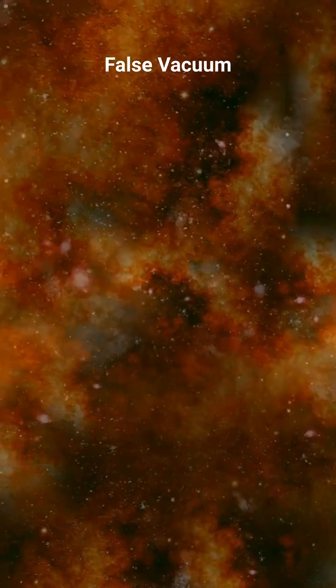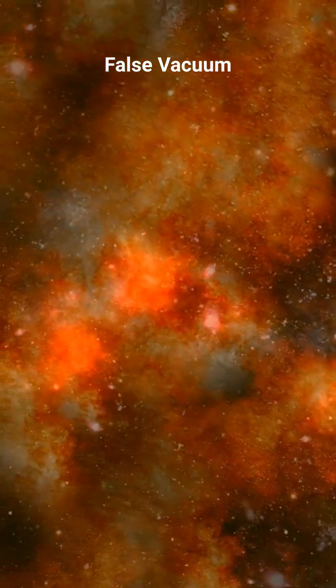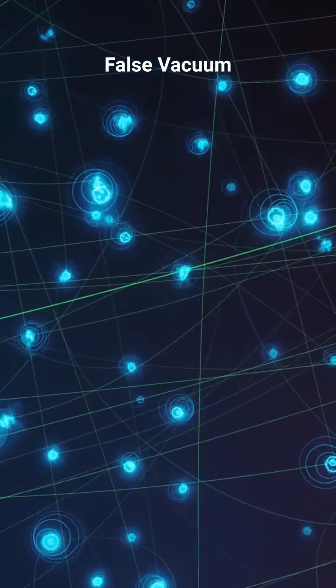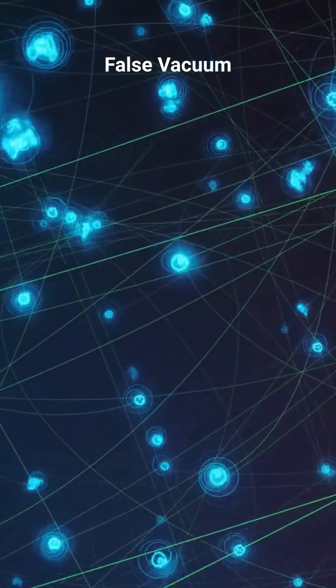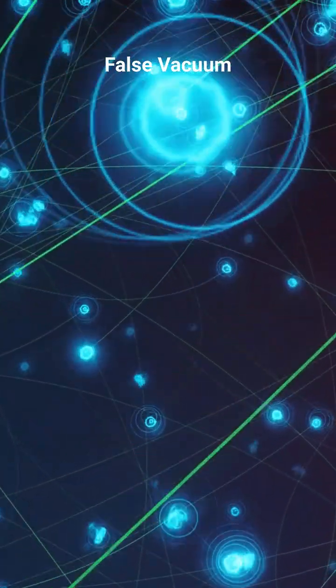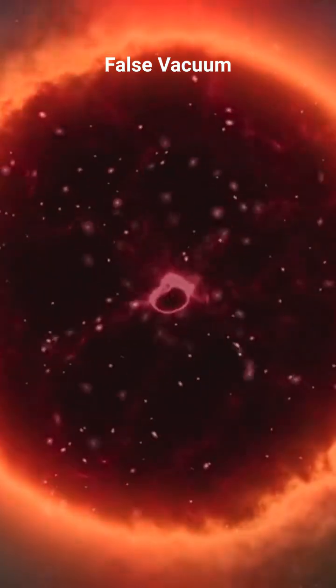A tiny quantum fluctuation could push it over, triggering a shift to a true vacuum. If that happens, a bubble of true vacuum would expand at the speed of light, erasing everything: galaxies, stars, even spacetime itself.